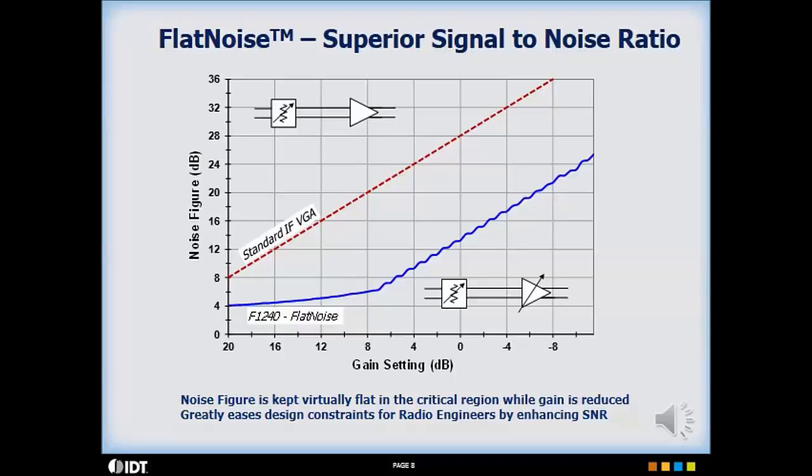From the plot, as you can see, for a gain setting of 8 dB, the standard IF VGA noise figure is 20 dB and the F1240 noise figure is only 6 dB.